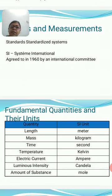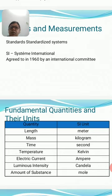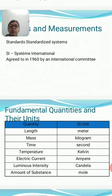The 7 fundamental quantities and their SI units are: length — meter; mass — kilogram; time — second; temperature — Kelvin; electric current — ampere; luminous intensity — candela; and amount of substance — mole. So if we write 'kilogram,' it means we are talking about mass. If we say '10 Kelvin,' that means we are talking about temperature. This illustrates the importance of both the physical quantity and its unit.